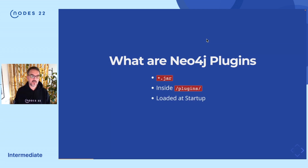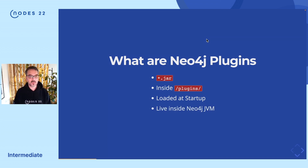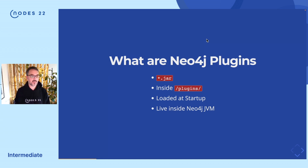At startup, Neo4j scans the Plugins folder, finds the jar file and loads them inside the JVM. This also means that your code will live inside the same JVM as the core database, meaning it has to share resources with them — memory, threads and so on. You have to be careful of what you're doing there, otherwise you could harm the database.